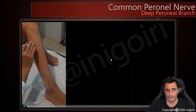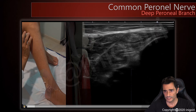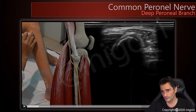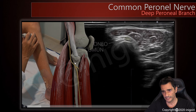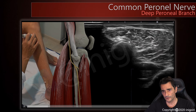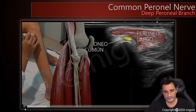Now let's see how it behaves in the ultrasound video. We are starting at the neck of the fibula, at the beginning of the peroneus longus muscle. This is the neck of the fibula, and this is the common peroneal nerve. If we follow the nerve at this level, we can see — although it is a bit difficult —